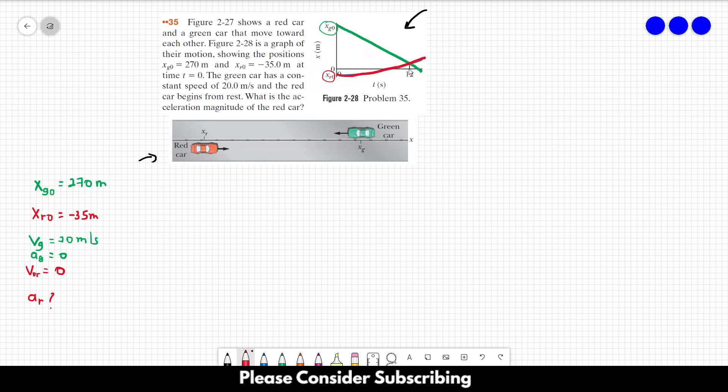Let's write the equation for the position of both cars, which is this equation: X equals X0 plus V0T plus AT squared over 2. For the green card, we have that XG equals XG0 plus VG times T. And the acceleration of the green card is 0, so we don't need to write this term.